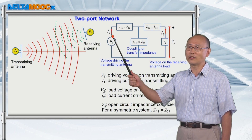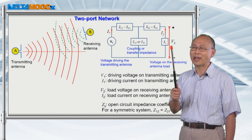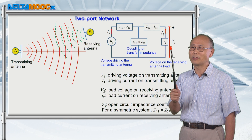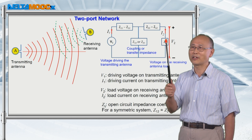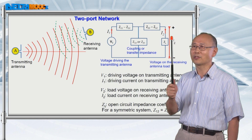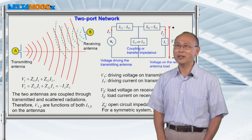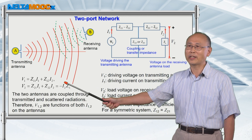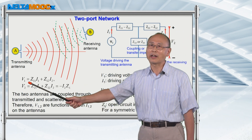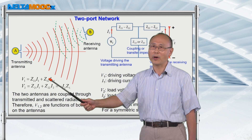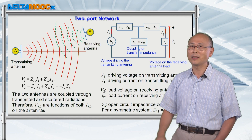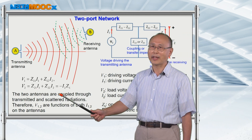So on antenna A, you have voltage and you have current. And on antenna B, there's a load associated with this antenna, and there's a voltage induced on it to generate a current I2. And there's a coupling impedance for these two signals to transfer back and forth. So if we write down the equations to describe this circuit, we have two equations. The voltage on antenna A is going to be a function of I1 and I2. The voltage on antenna B will also be a function of I1 and I2.